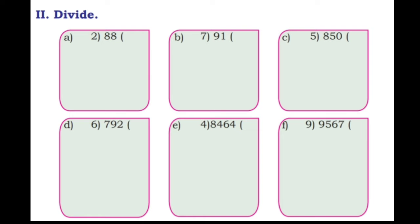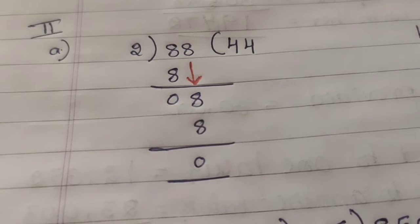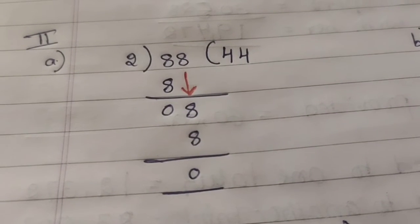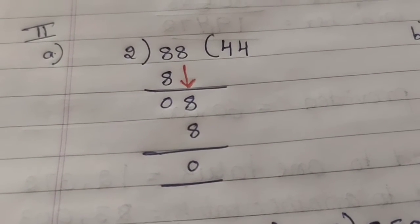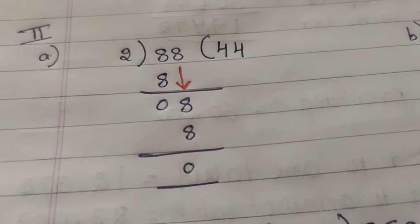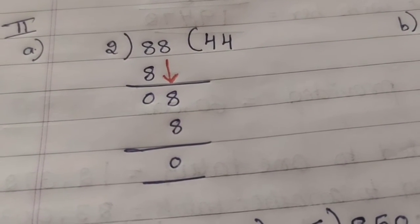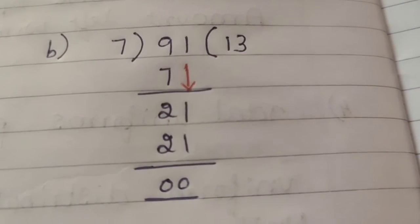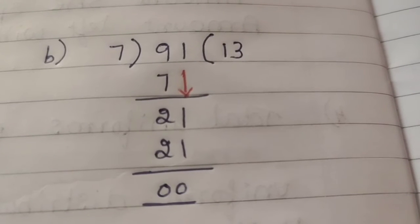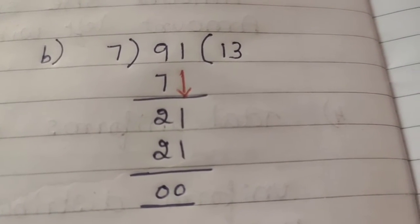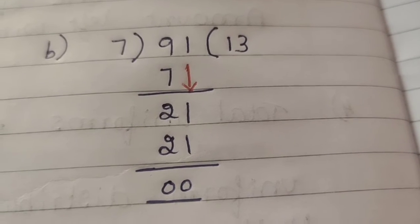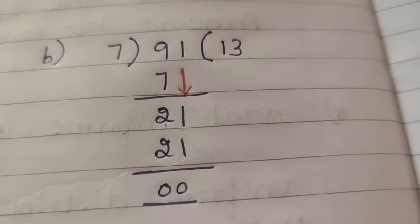Second: divide. First question: 88 divided by 2. 2 fours are 8; 8 minus 8 is 0. Bring down 8. Again 2 fours are 8; 8 minus 8 is 0. Second question: 91 divided by 7. 7 ones are 7; 9 minus 7 is 2. Bring down 1, making 21. 7 threes are 21; 21 minus 21 is 0.